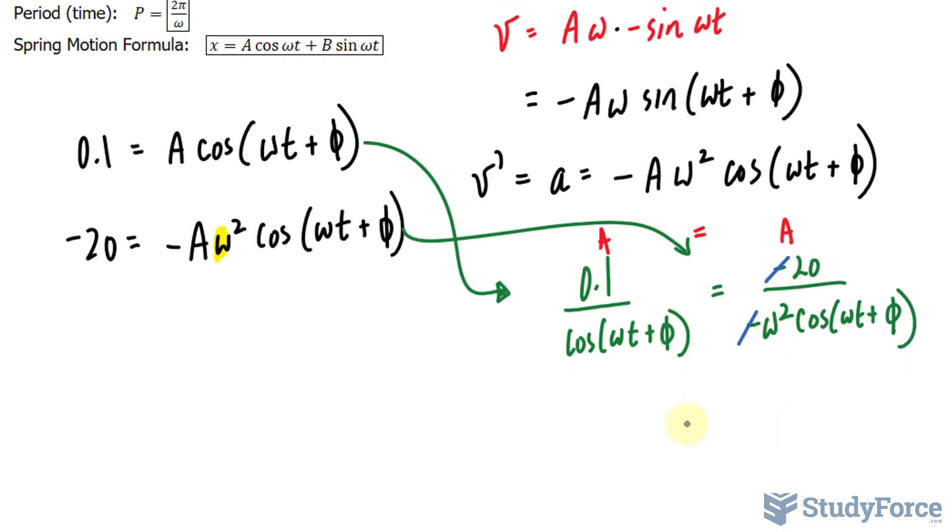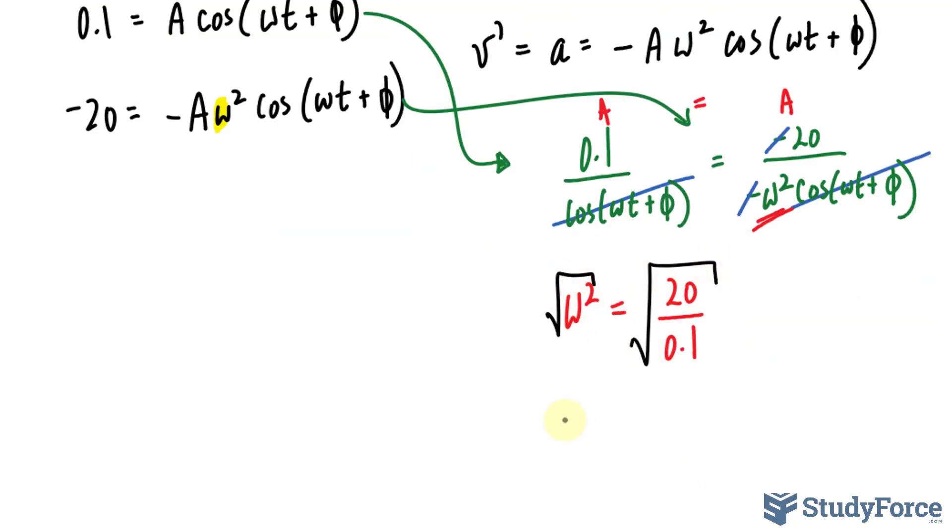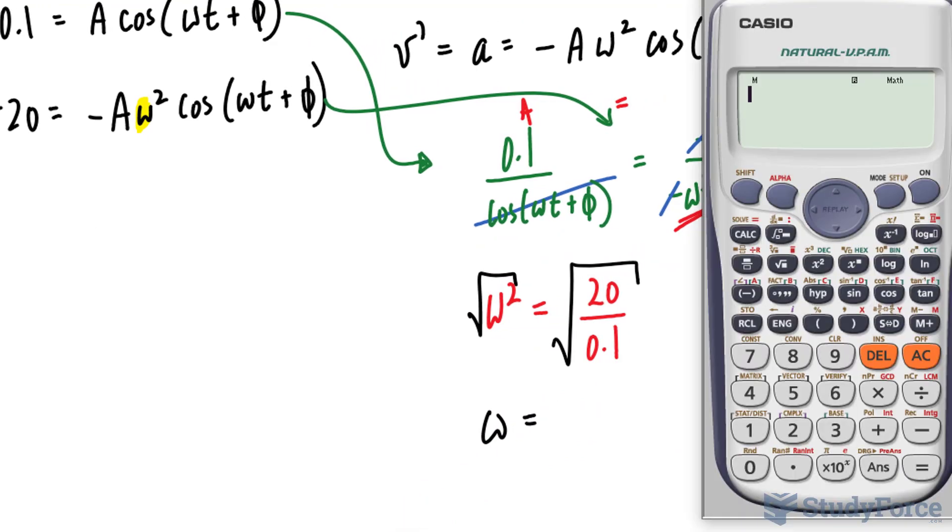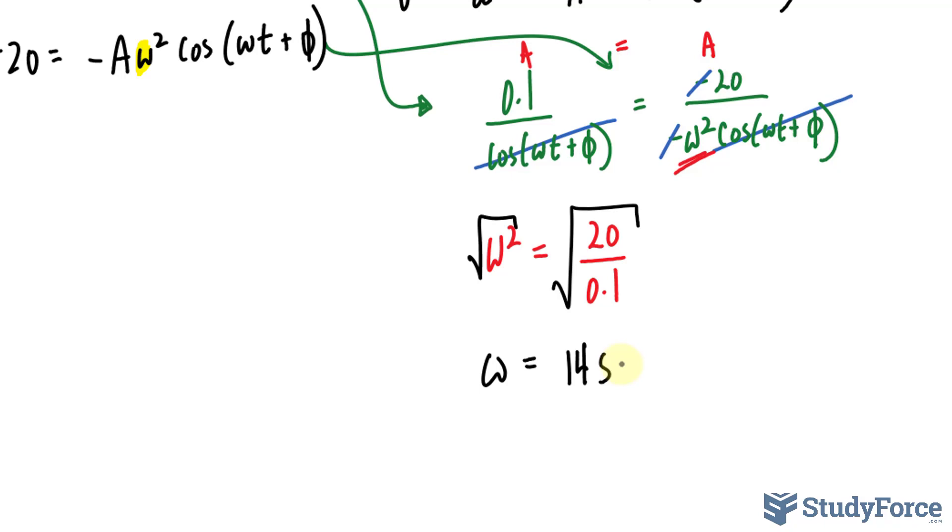Watch this. This negative and that negative cancel out. This cosine and that cosine cancel out. Just pretend we multiplied both sides by cosine omega t plus phi. They would have disappeared. Solving for this, we get omega squared is equal to 20 over 0.1. Square rooting both sides, the square root of 20 divided by 0.1 makes roughly 14.1, so 14 seconds.